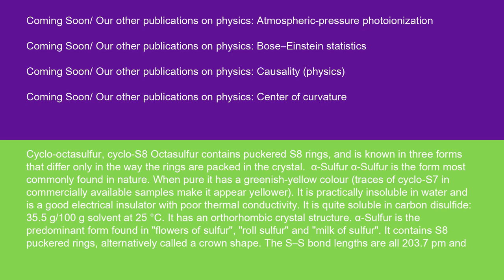Cyclooctasulfur, cyclo-S8: octasulfur contains puckered S8 rings and is known in three forms that differ only in the way the rings are packed in the crystal. Alpha-sulfur is the form most commonly found in nature. When pure it has a greenish-yellow color; traces of cyclo-S7 in commercially available samples make it appear yellow. It is practically insoluble in water and is a good electrical insulator with poor thermal conductivity. It is quite soluble in carbon disulfide (35.5 g per 100 g solvent at 25°C). It has an orthorhombic crystal structure.